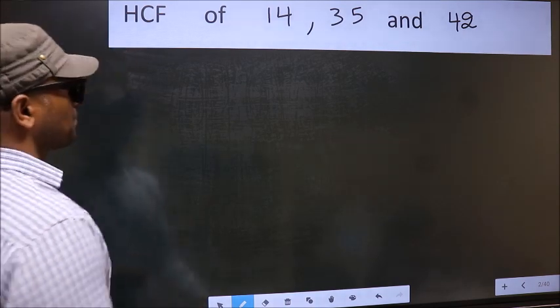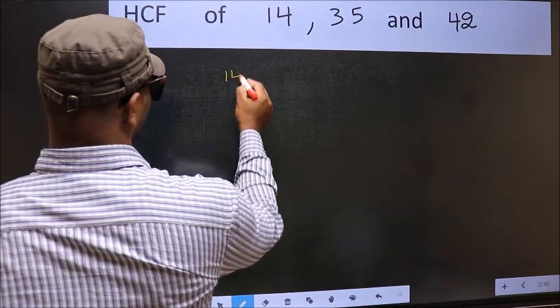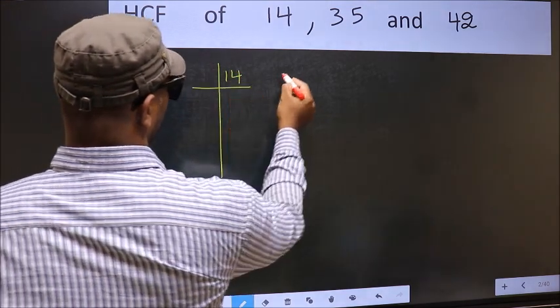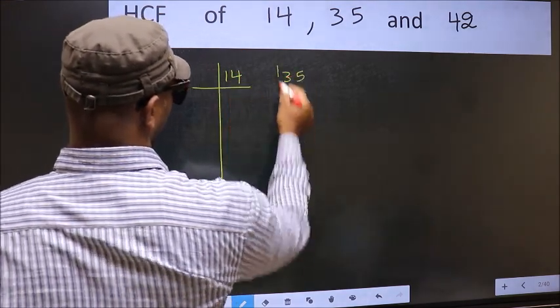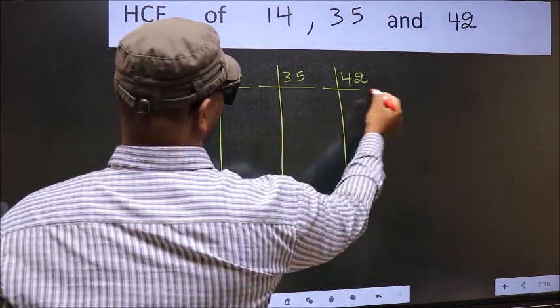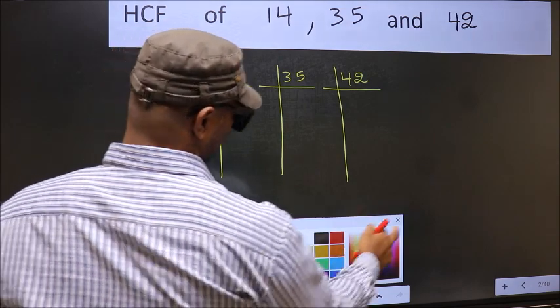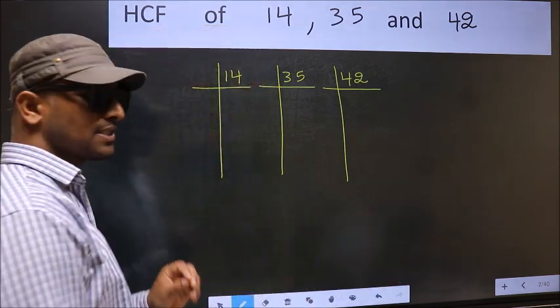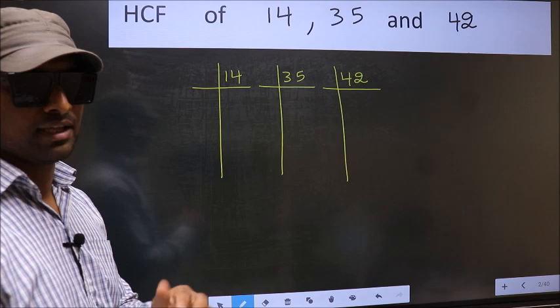What I mean is 14, 35, 42. This is your step 1. Next.